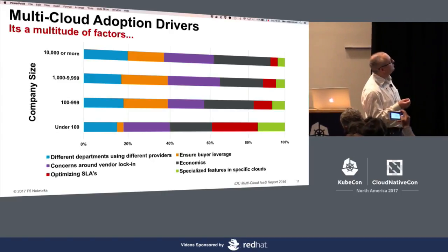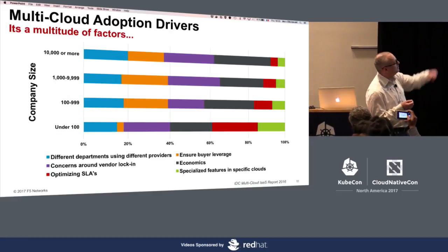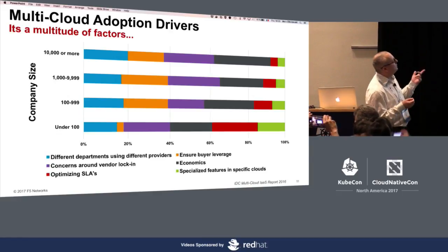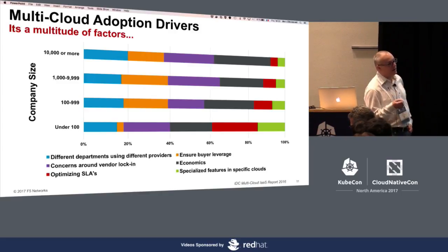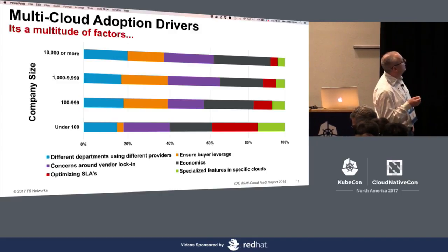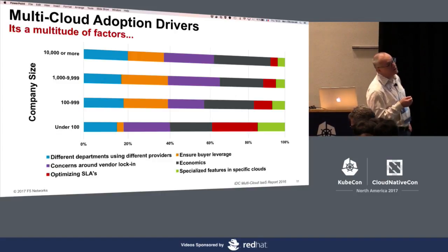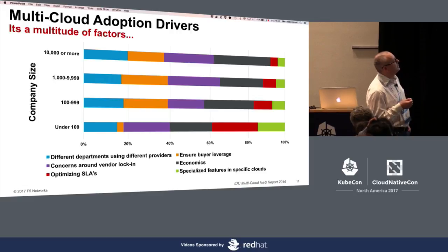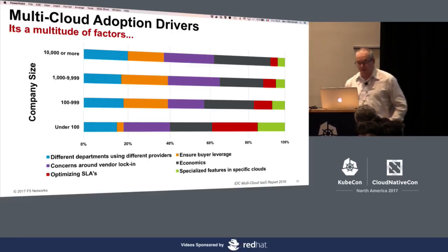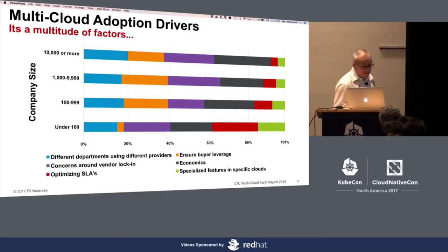What are drivers for multi-cloud adoption? It can be buyer leverage for different departments and teams. It can be increased availability and disaster recovery. And it turns out it varies quite a bit depending on company size. Optimizing SLA is a big thing for smaller companies under 100, but they are less concerned with buyer leverage. It's quite the opposite for large companies of 10,000 or more.